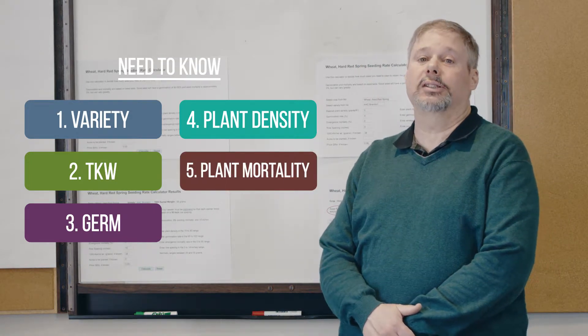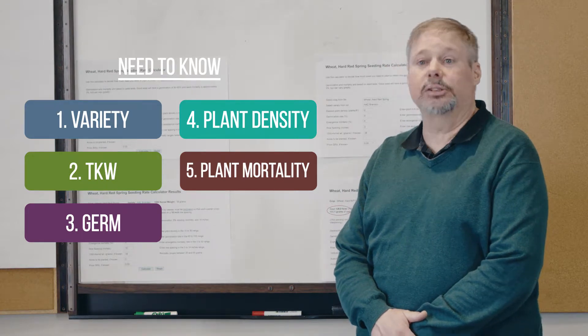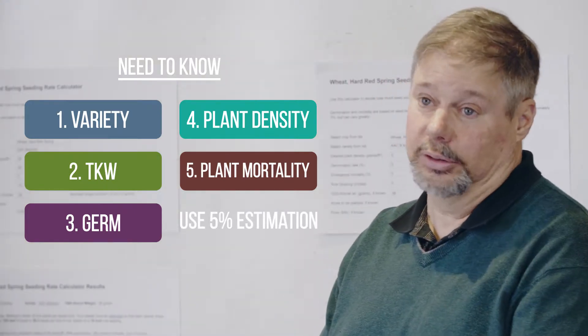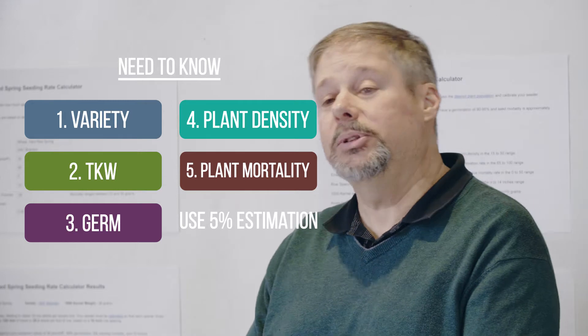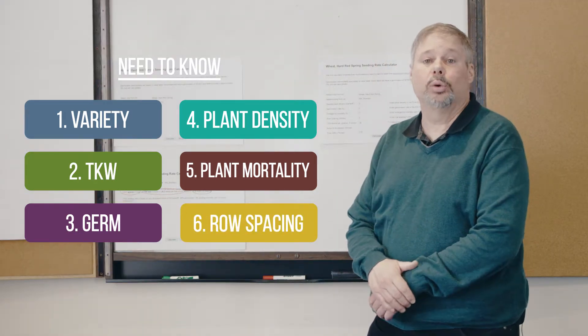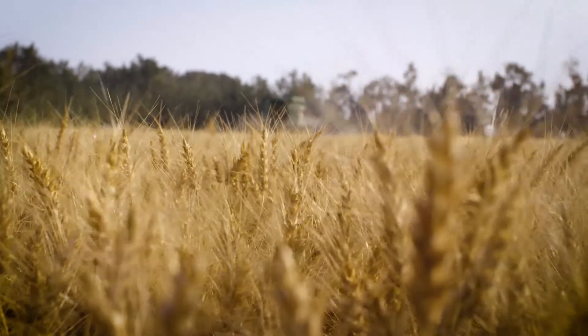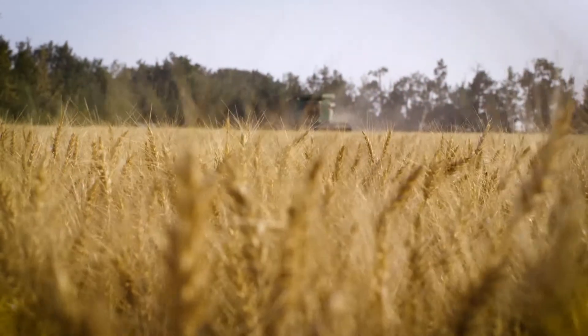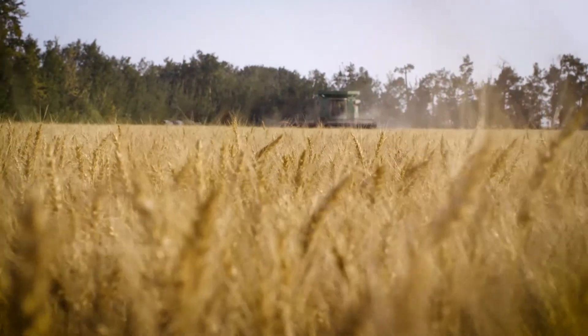Plant mortality is very difficult to guess. You're guessing before you plant the seed whether there may be a wet year or dry year. It's really hard to say, so 5% is a very safe number to use. The other thing you need is row spacing, which is very important. 10 is what I used, which is most planters today.